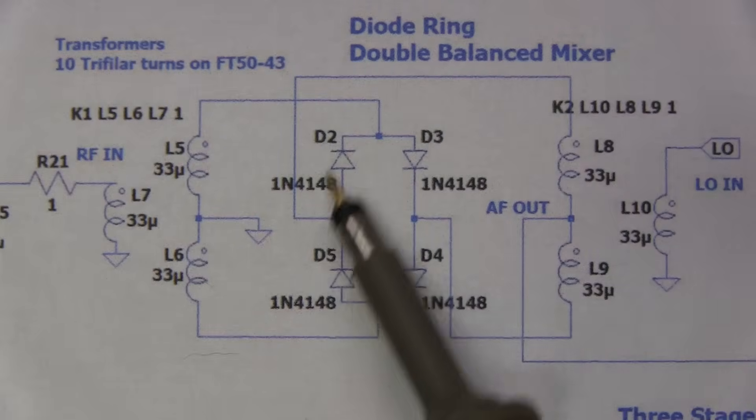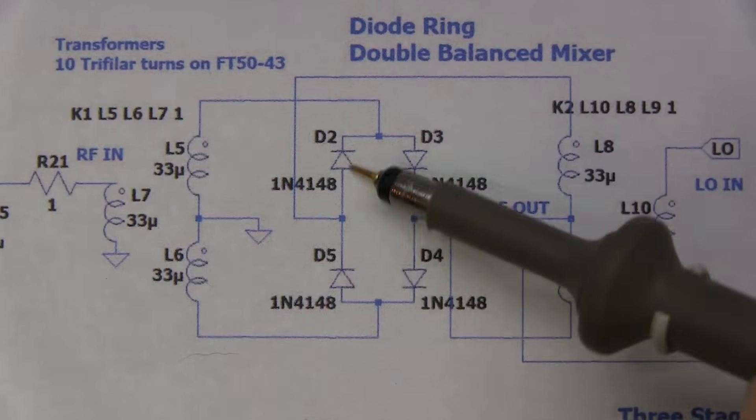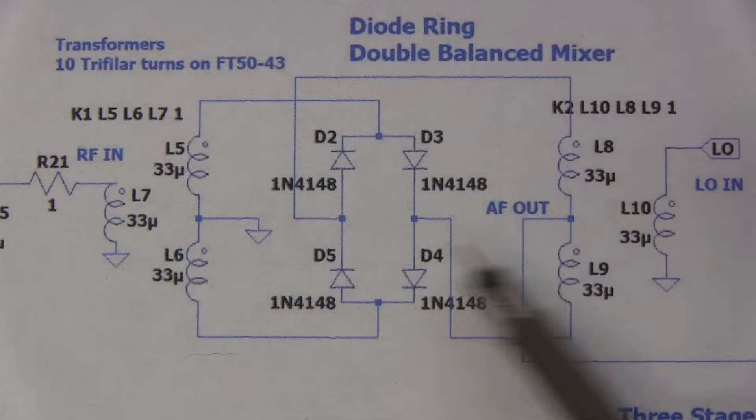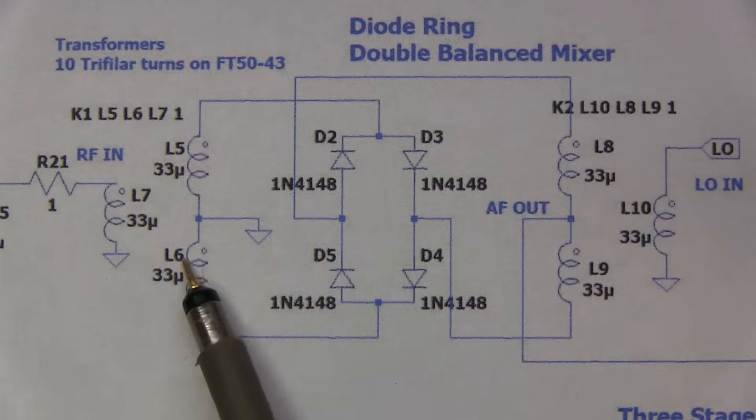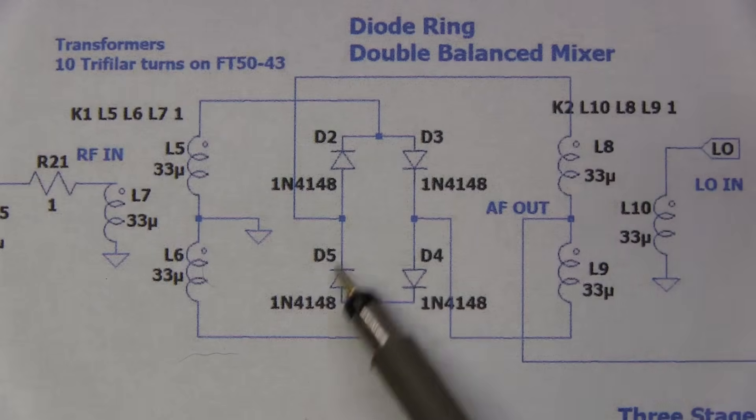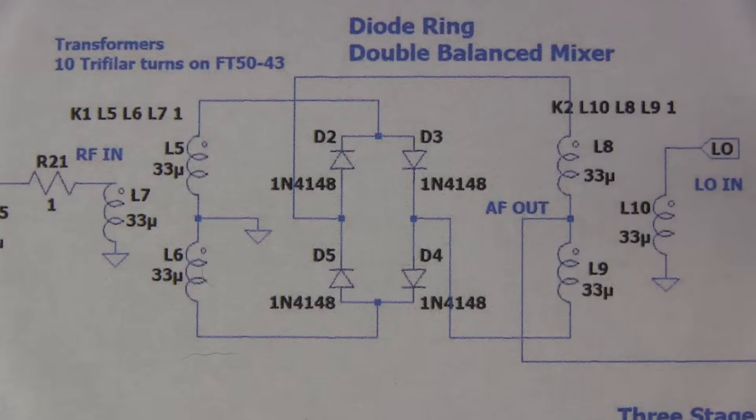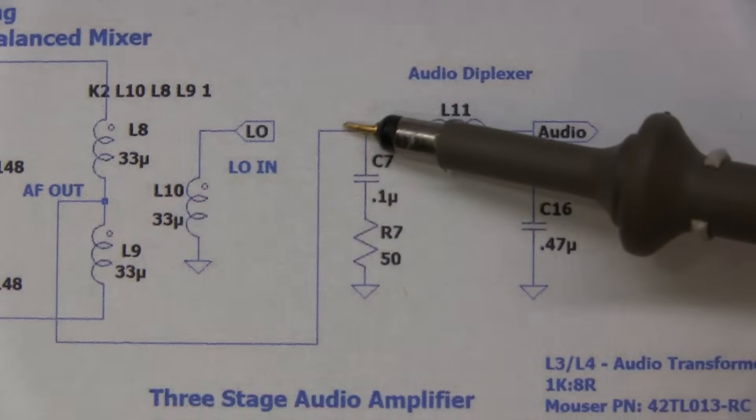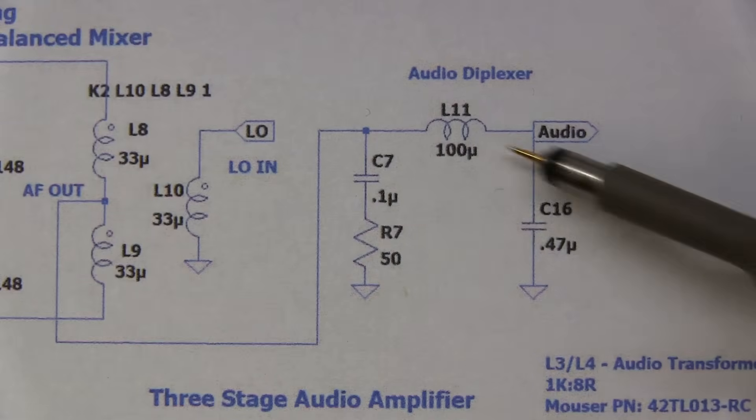Here's our diode ring double-balanced mixer. Essentially, it looks like a bridge rectifier, but it's not. If you've seen my video on the diode ring mixer, you'll see that. These are essentially arranged in a ring, if you will, and then a pair of transformers that are center tapped. Our RF comes in over here, goes into this pair of transformers, applies the signal to the diodes. Then we've got our local oscillator coming from the VFO coming into this transformer here that commutates the diodes on and off, which effectively forms a switching action. Then the output of the mixer comes here, and that output then goes into our audio diplexer, which provides an RF path to 50 ohms for the RF signals so they get properly terminated, and then an LC low-pass filter to output the audio to go into the audio amplifier.